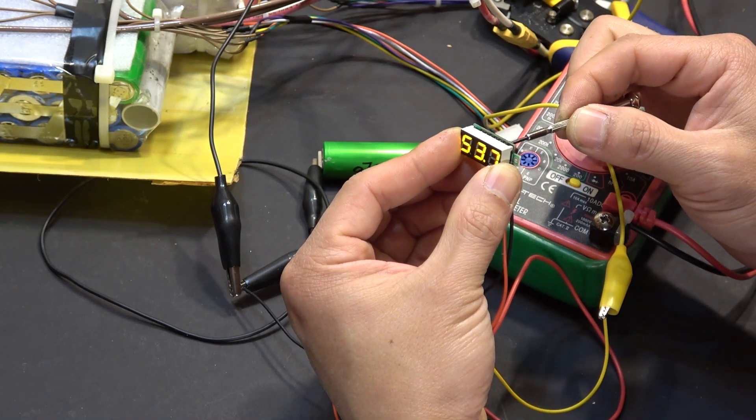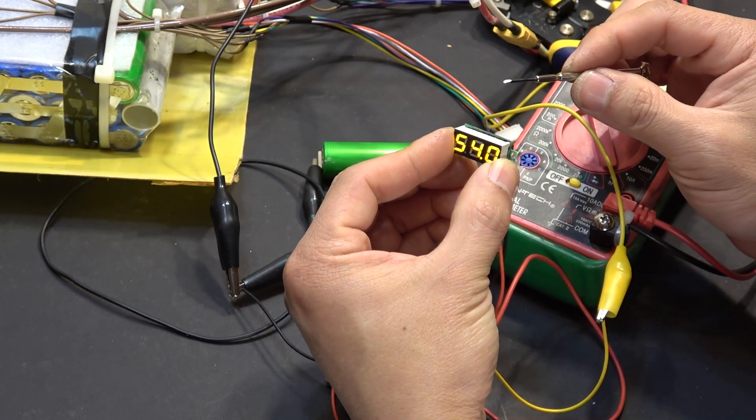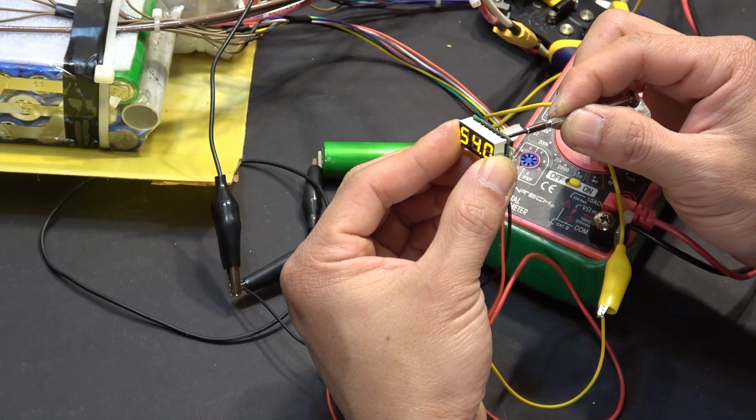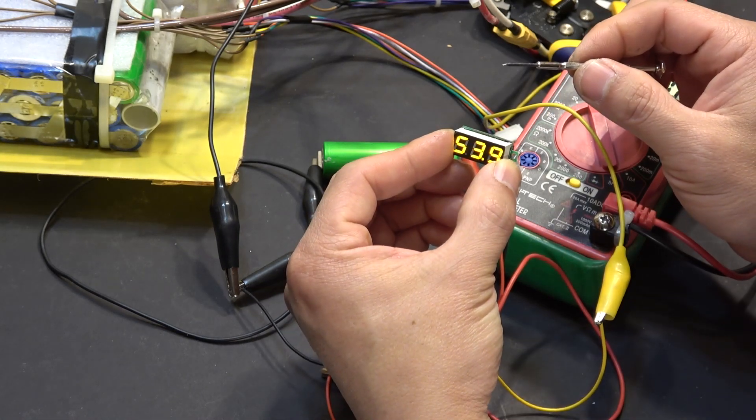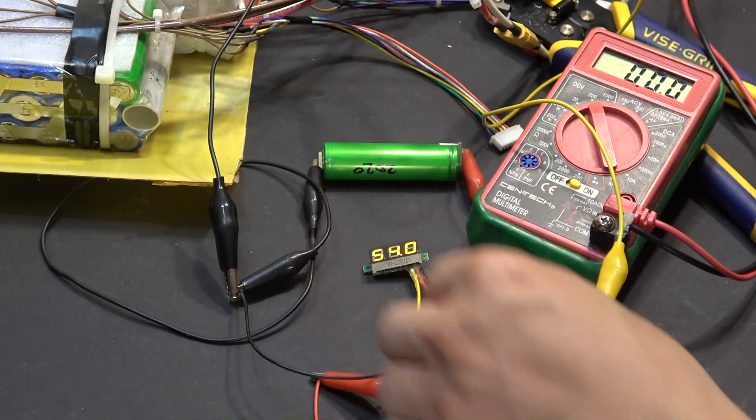A little bit more. 54. A little bit too much, so let's go back a little bit. There. 53.9, 54 volts. That is perfect.